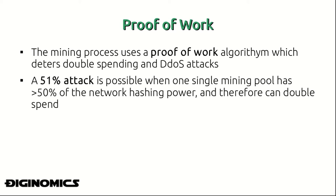This type of algorithm deters double spending and helps to prevent distributed denial-of-service attacks. A 51% attack is only possible when one single mining pool comprises over half of the network hashing power, and can then double-spend their money, acting as a dishonest node and compromising the integrity of the Bitcoin network.